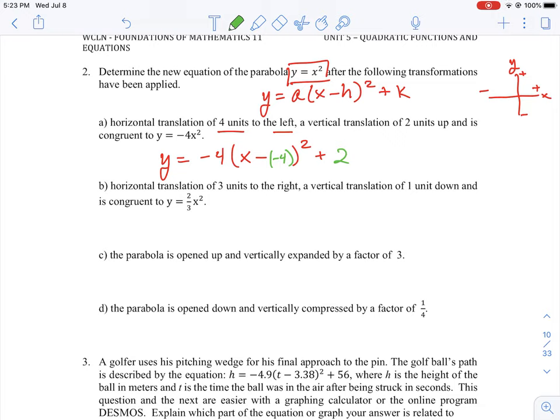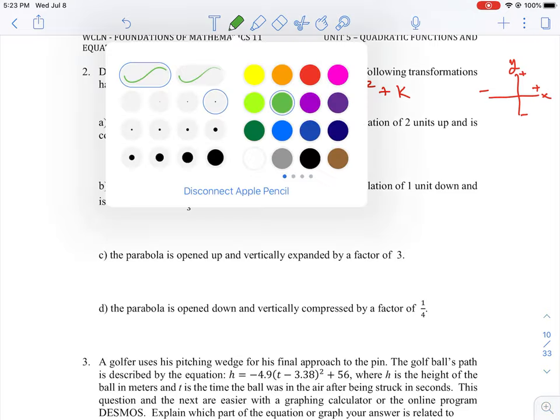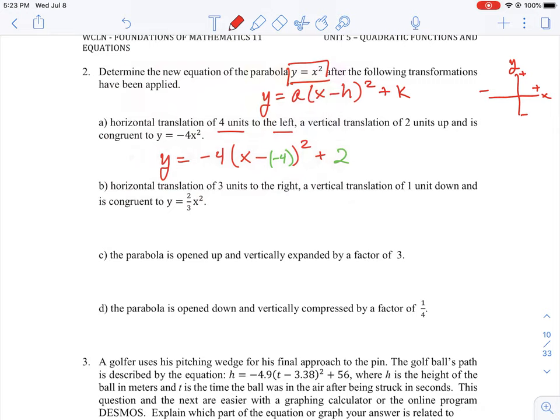So we could simplify this equation a little bit because what we have here is two negatives here side by side, which will turn that into a plus 4 rather than minus minus 4. So we could then rewrite our question here. I'll take it back to red as follows. y is equal to negative 4(x plus 4) squared plus 2. And that would be the translated equation according to those properties.